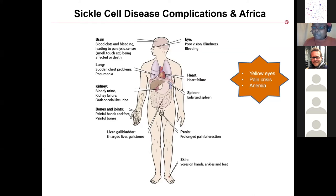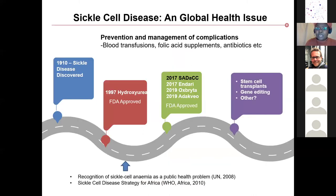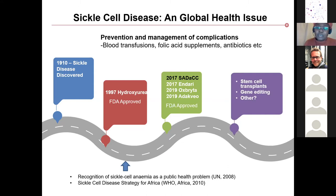The prevalence of sickle cell disease is very high in Africa. Africa contributes more than 75% of live births of sickle cell, and it is estimated that over 300 babies are born with sickle cell globally every year. The reason for such high prevalence in Africa is because of malaria — people who carry the mutation are more resistant to malaria. And for a long time, sickle cell was a neglected disease globally.